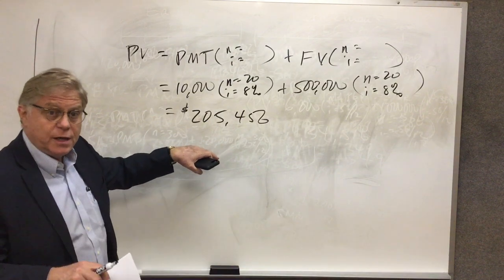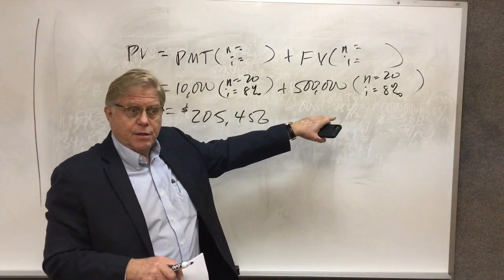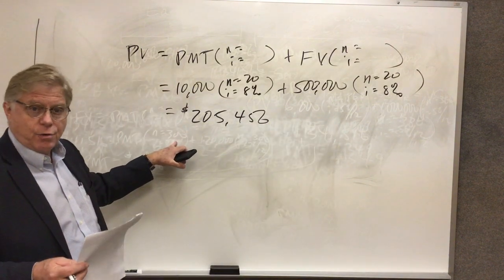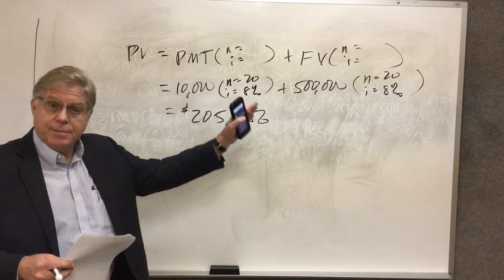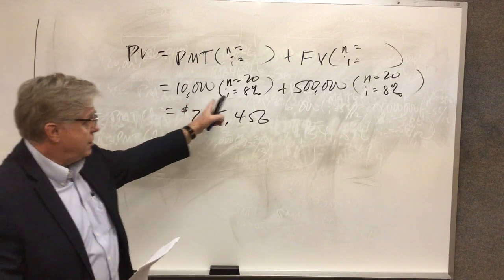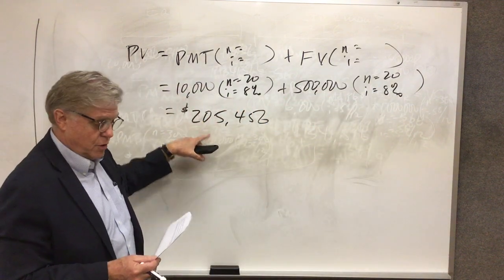Now she's not getting $205,456 in cash today. What she's getting is a stream of payments that has this value to her today, given her required rate of return and given the amount and the timing of these cash flows.